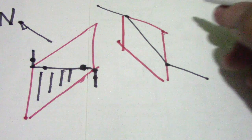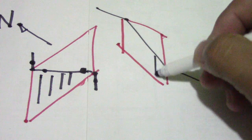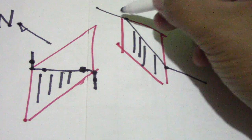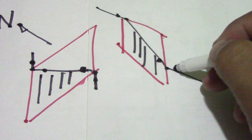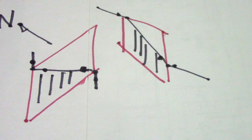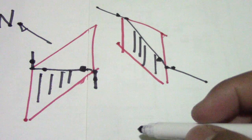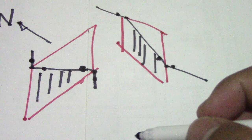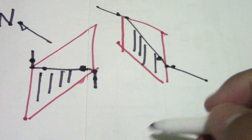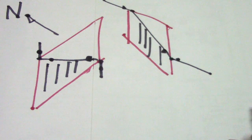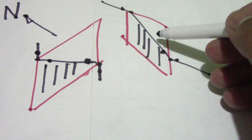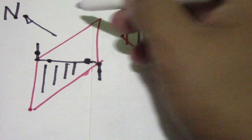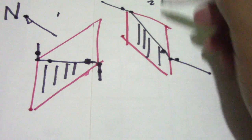And this is also a vertical shadow. We will convert this vertical shadow in the plan view. So first, we have number one and number two, and we will convert number two in the plan view.